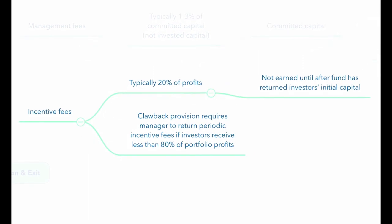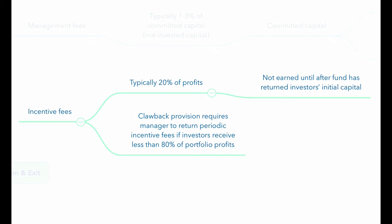Incentive fees for PE funds are typically 20% of profits, but these fees are not earned until after the fund has returned the investor's initial capital. There is also a clawback provision, which requires the manager to return any periodic incentive fees to investors that would result in investors receiving less than 80% of the profits generated by the portfolio as a whole.